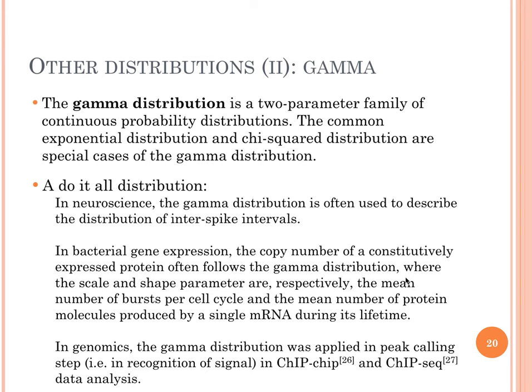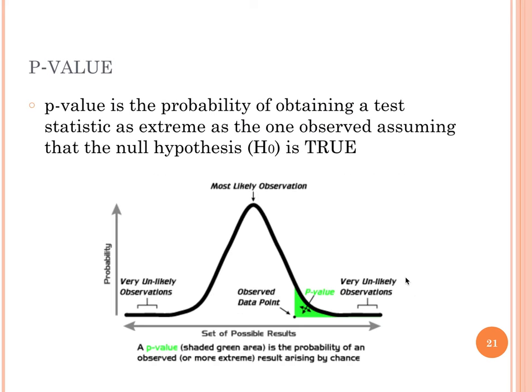These are the three important distributions we need to be aware of when doing RNA-seq data analysis, as the actual model that RNA-seq data follows is built on these three. Another important concept, especially when performing different types of statistical tests, is the p-value.